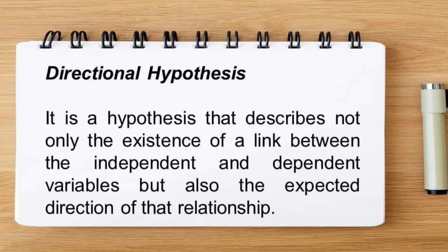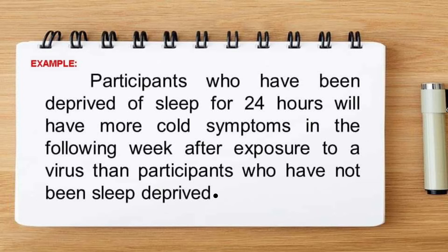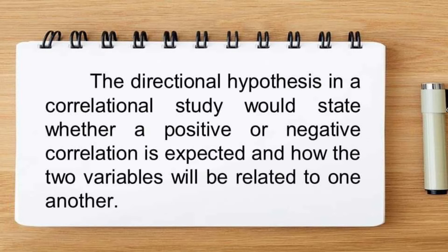A directional hypothesis describes not only the existence of a link between the independent and dependent variables, but also the expected direction of that relationship. It expresses which way you believe the findings will go. For example, in an experimental study: participants who have been deprived of sleep for 24 hours will have more cold symptoms in the following week after exposure to a virus than participants who have not been sleep-deprived. The hypothesis compares the two groups and states which one will have more or less, be quicker or slower. In a correlational study, the directional hypothesis states whether a positive or negative correlation is expected.